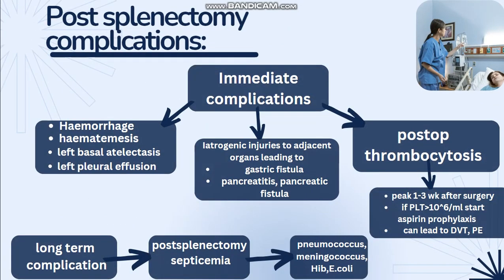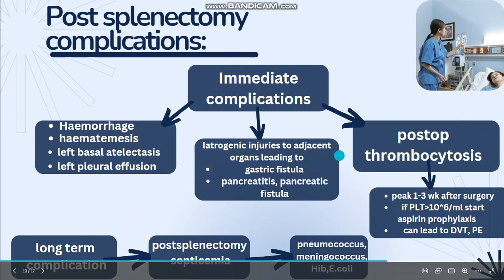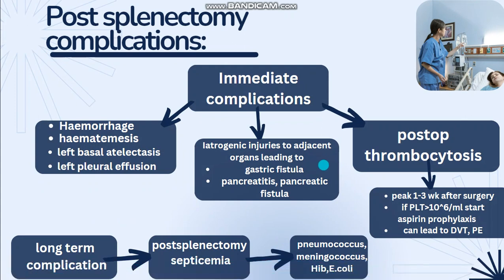Heading towards post-splenectomy complications. In immediate complications, hemorrhage can occur due to slippage of a ligature. Hematemesis can occur due to gastric mucosa damage. Left basal atelectasis and left pleural effusion are common. Iatrogenic injuries to adjacent organs can occur, which can lead to gastric fistula, pancreatitis, or pancreatic fistula in the long run.